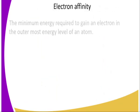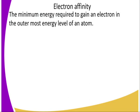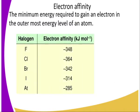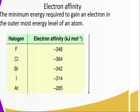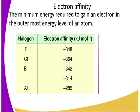Now, on to electron affinity. This is the minimum energy required to gain an electron in the outermost energy level of an atom. Halogens react by gaining electrons. The electron affinity decreases down the group, and this also affects their reactivity — reactivity decreases down the group. So fluorine is the most reactive, followed by chlorine, then bromine, then iodine.